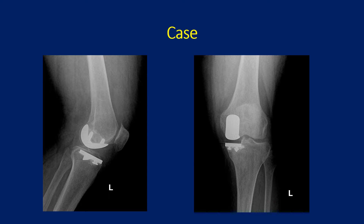When all of those fail, the best solution is a partial knee replacement. Here you can see on AP and lateral views, we've resected the diseased, overloaded part of her knee and placed an articulating implant with a polyethylene insert.